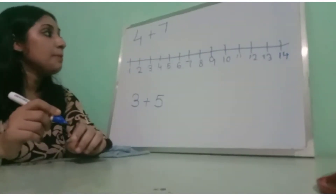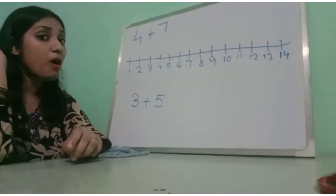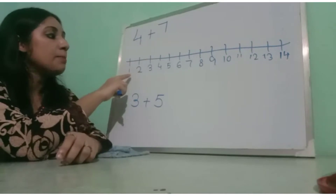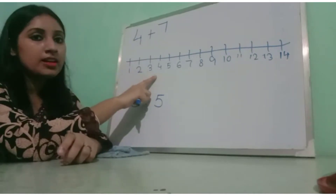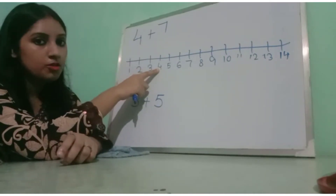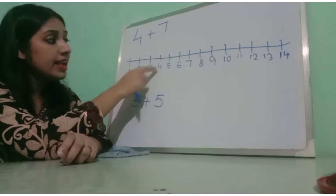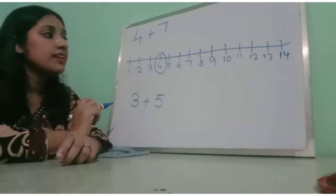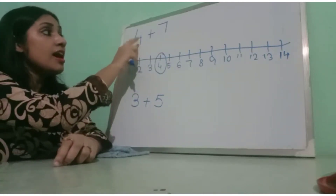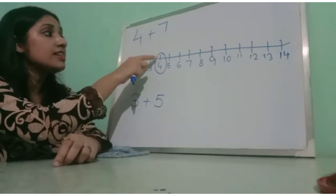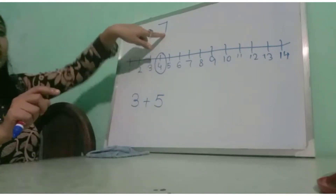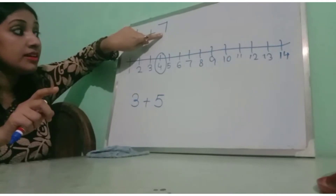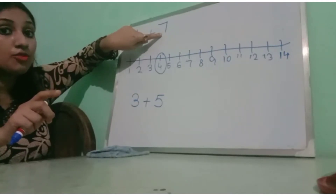ओके, अभी कैसे करेंगे — बहुत easy है। 4 plus 7, तो यहाँ पे 4 की number line कौन सी है? यह है हम लोग का 4, और यह है हम लोग की 4 की line। 4 के घर से हमें जाना है कितने घर? 7।